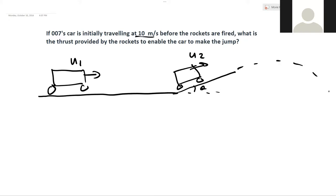Then it would just do this jump in the projectile path. We're going to say that it lands at the same height. We'd like to know what force, here's the rocket power, which would provide a force Ft that would accelerate the car from u1 to u2.